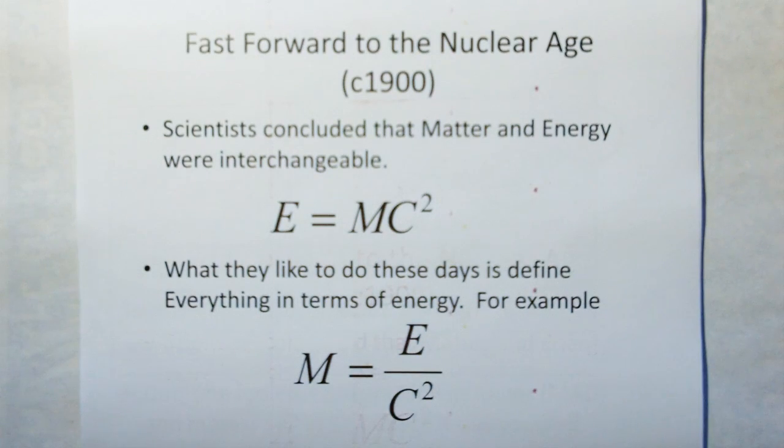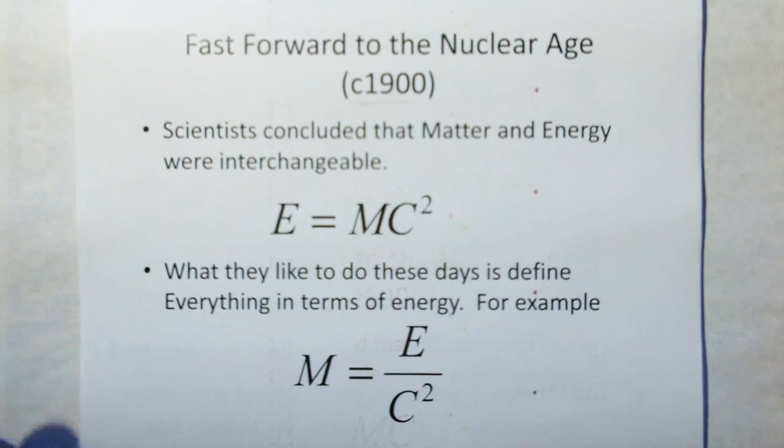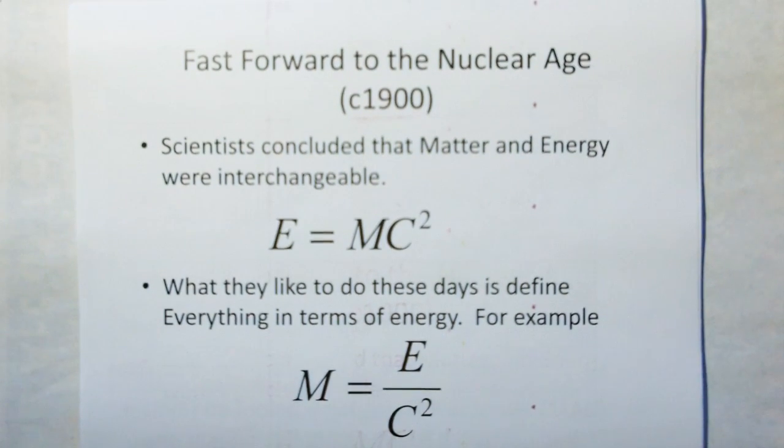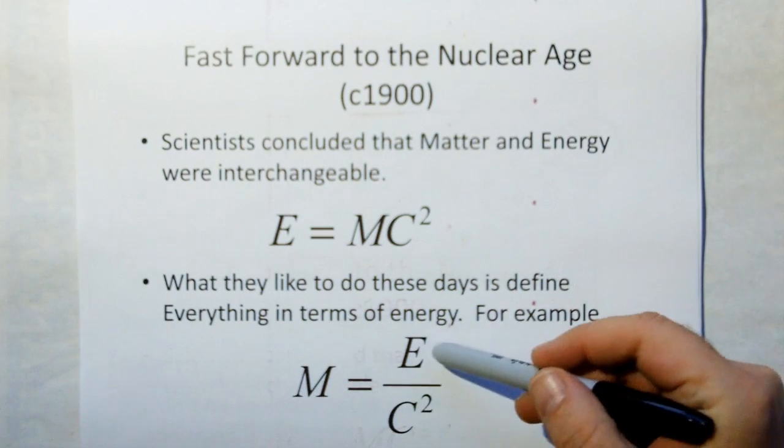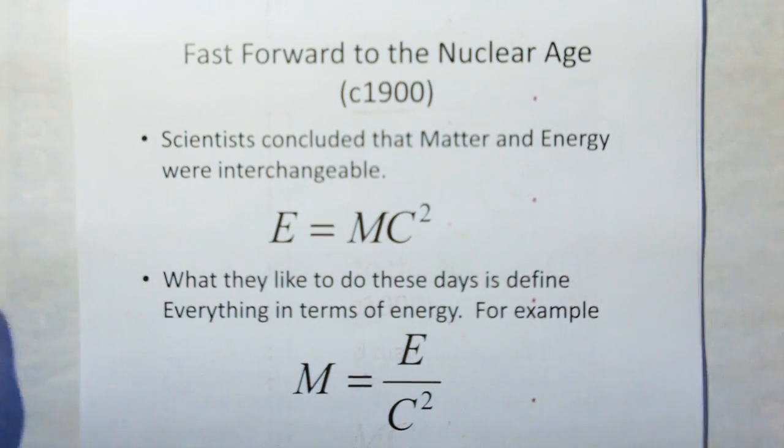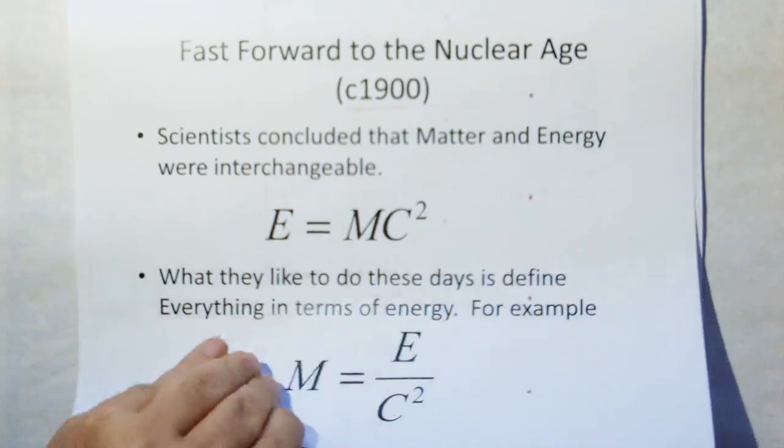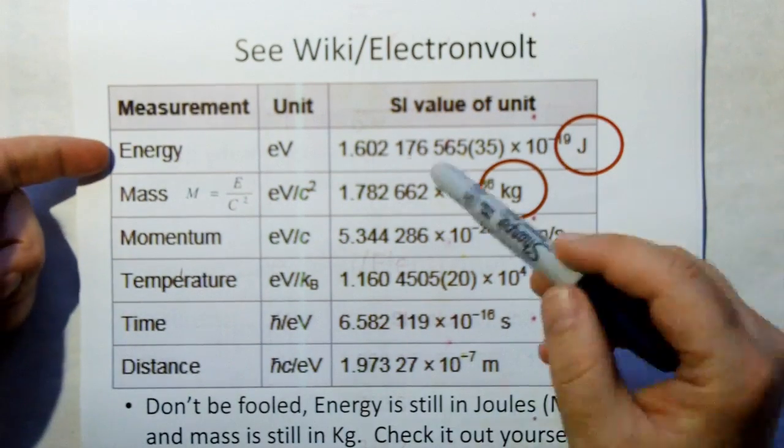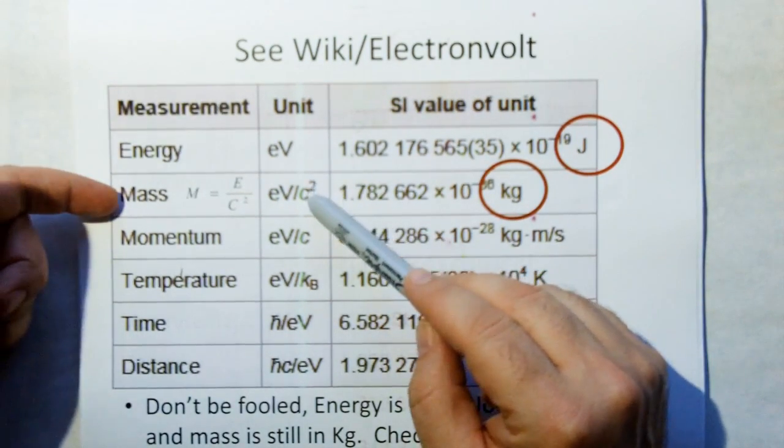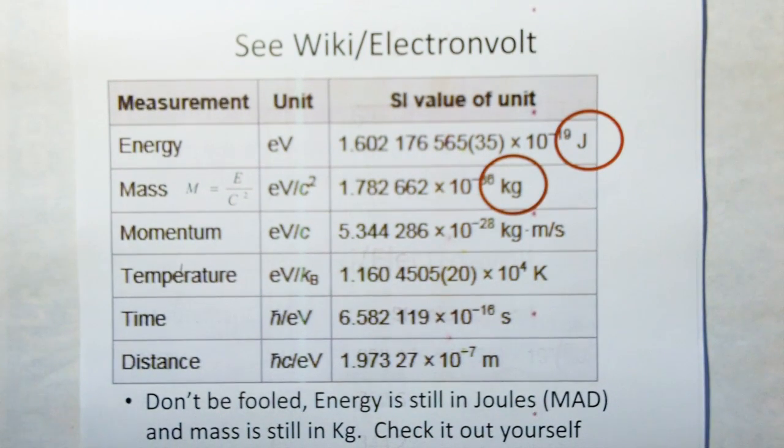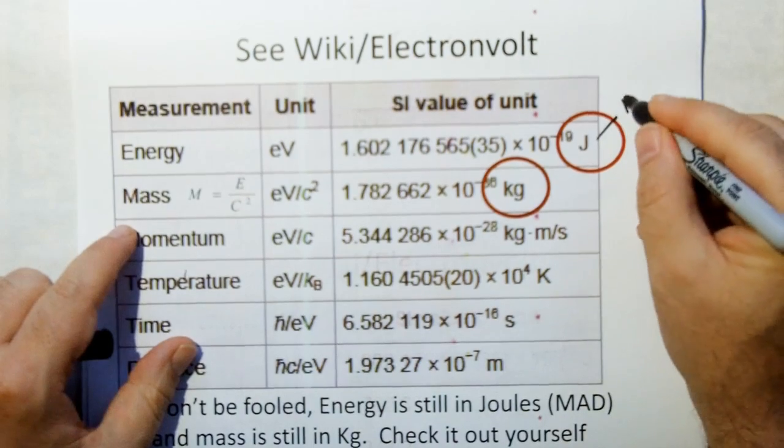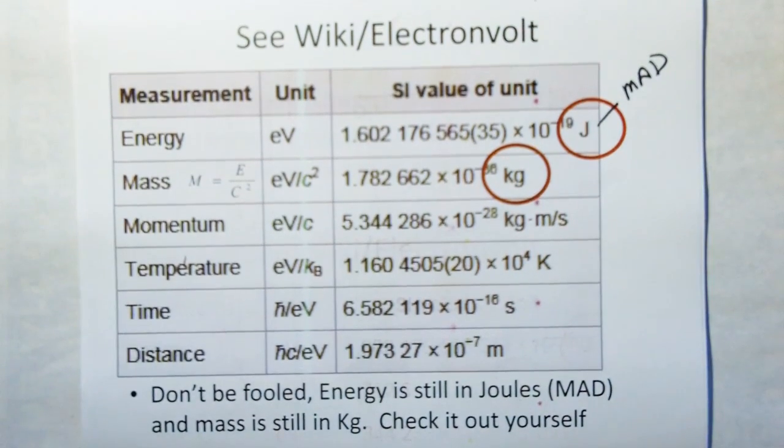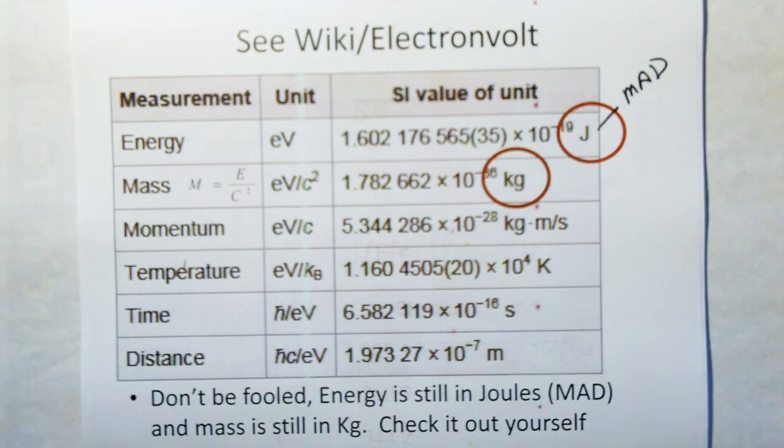Fast forward to the nuclear age, circa 1900. Scientists concluded that matter and energy were interchangeable, E equals mc squared. They like to substitute mass out by replacing it with energy over c squared so they can talk strictly in terms of energy. They do this with the electron volt. Mass is the electron volt divided by c squared. You might think they figured this out, there's no circular definition, everything is defined in terms of energy. No, the energy here, the units are joules which are still MAD. This is still a definition which requires mass. They haven't done anything. All they've done is put lipstick on a pig.